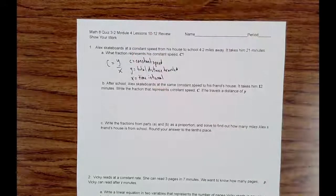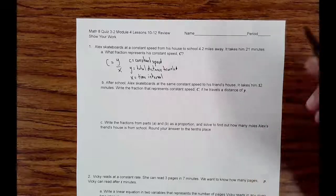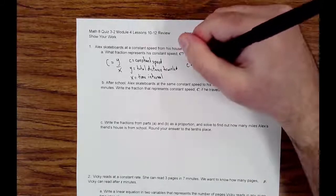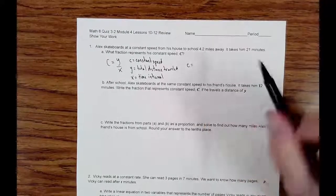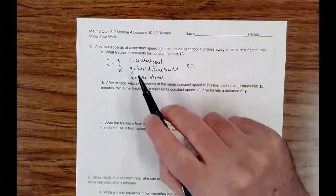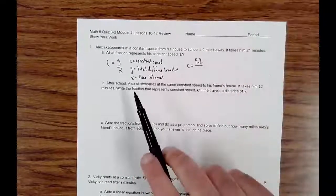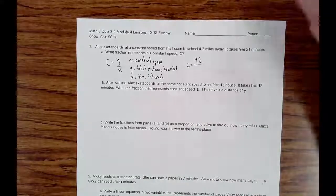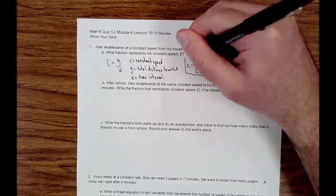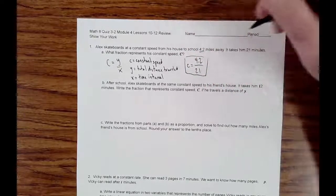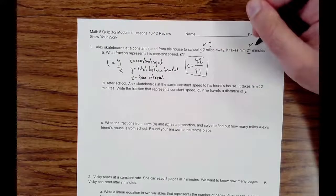So for this problem, we're going to plug in the Y and the X to find the C, the constant speed. So in this case, the distance traveled is 4.2 miles. So we're going to put 4.2, that's the Y, so it's going to be on the top. And the X is the time interval, which in this case is 21 minutes. So that is the C, the constant speed for this one.